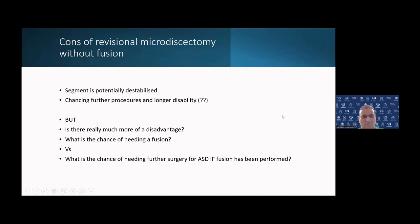What are the cons against this option? Well, we know that sometimes a revisional microdiscectomy approach will probably remove a little bit more bone and undermine the facet a little bit more, so we could potentially destabilize that joint and that segment, allowing the possibility and risk of a further procedure later on and a longer disability. However, what is really the disadvantage in quantifiable terms?